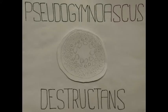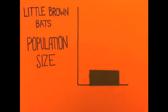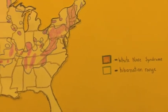Since 2006, when the infection was first documented, up to 98% of the little brown bat population has been decimated, and the fungus continues to spread throughout North America and now Europe.